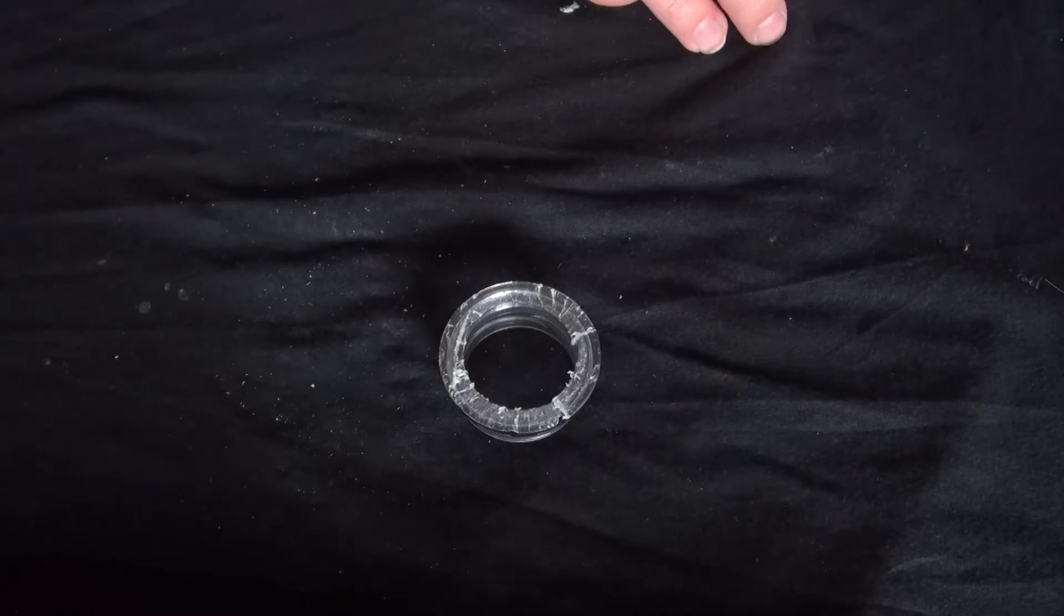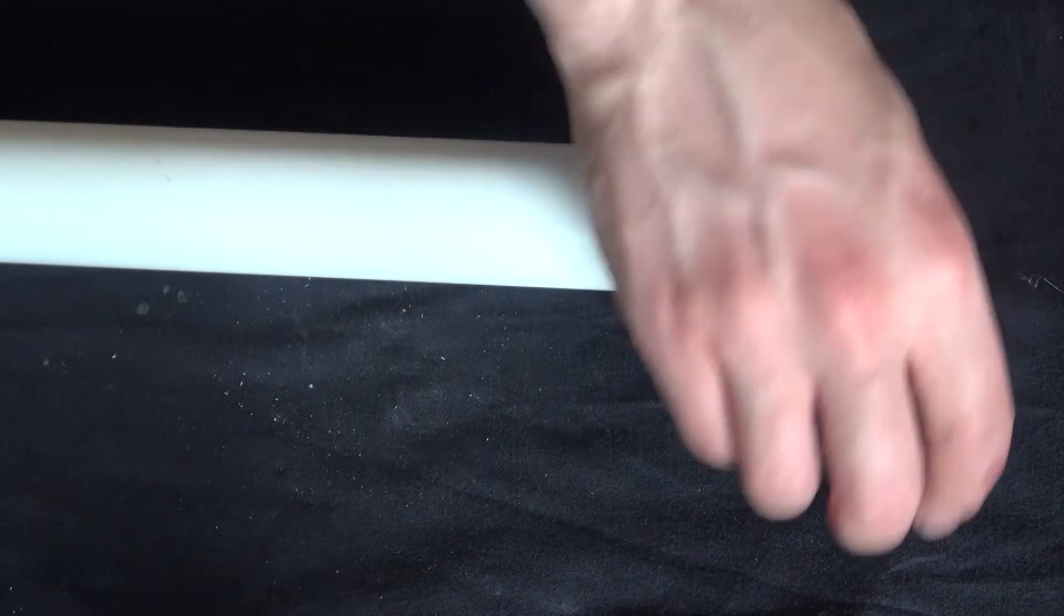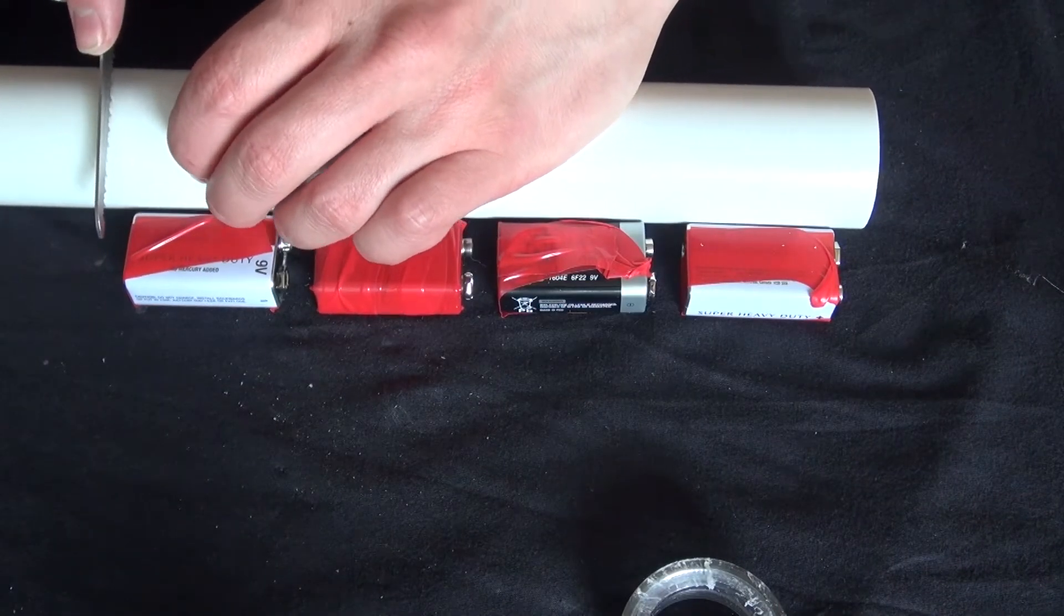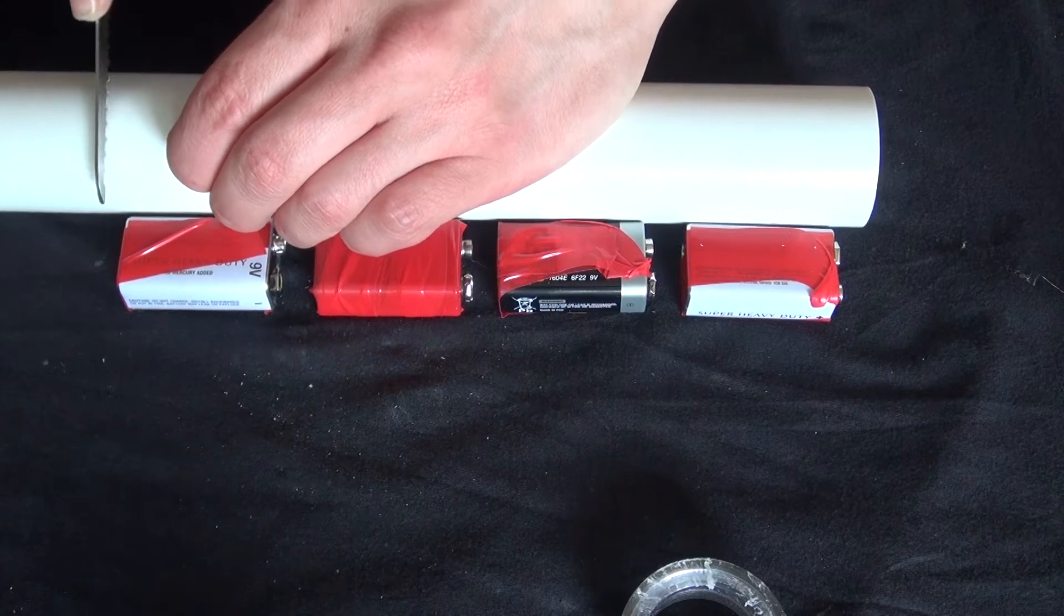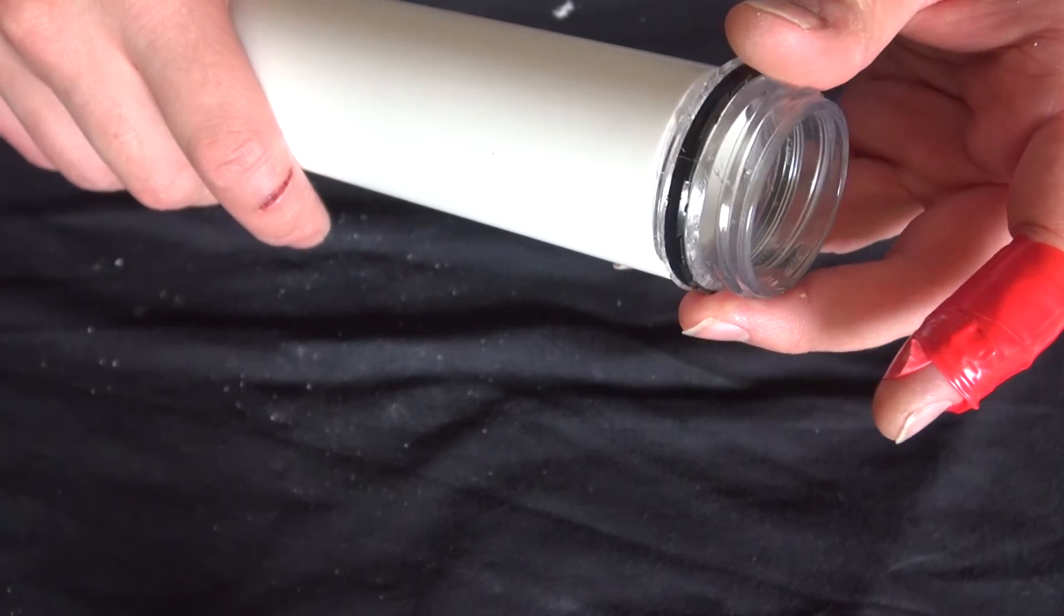There we go now that part is removed and now I can go ahead and glue it to the PVC pipe. So I want the PVC pipe to fit the batteries perfectly so I'm going to need to cut it about this size. There we go.